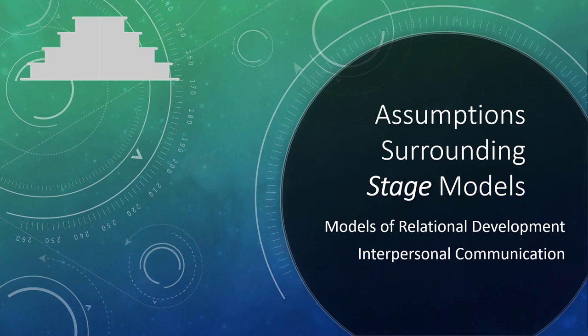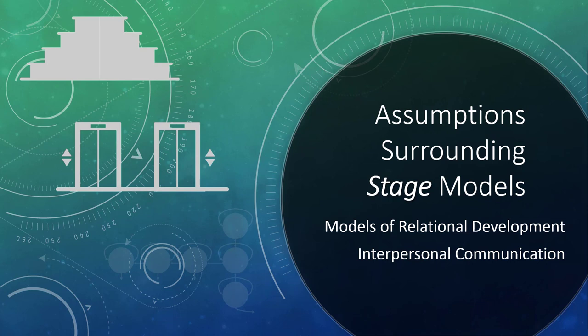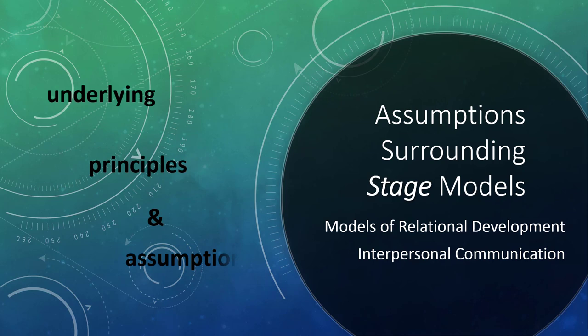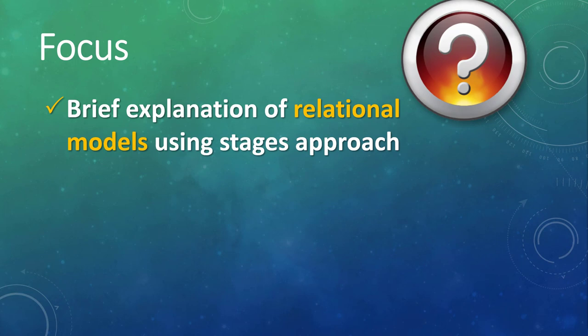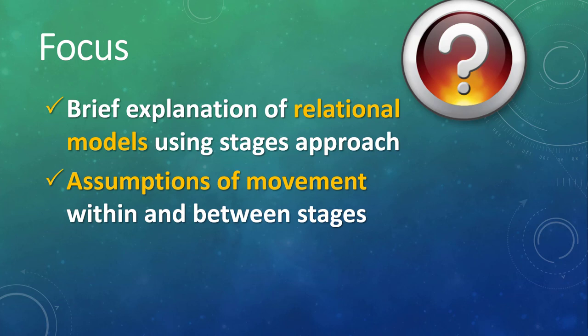While one of the earliest explanations of how relationships develop is Mark Knapp's staircase model, other scholars have developed their own versions, like Beebe, Beebe, and Redmond's elevator model and Joseph DeVito's six-stage model. All of these models, however, have the same underlying principles and assumptions behind them. This video will focus on a brief explanation of relational models that use the stages approach and assumptions related to how movement occurs within and between the stages.